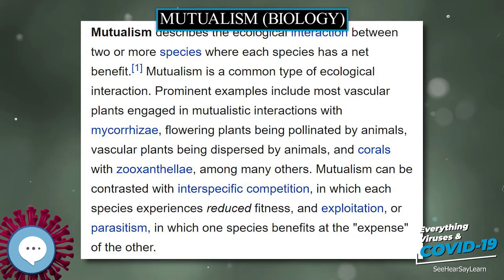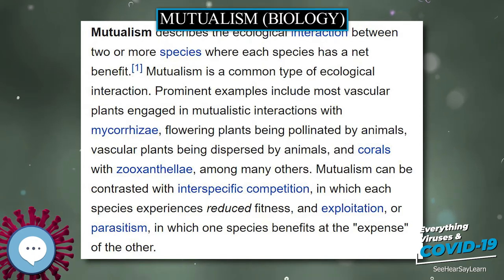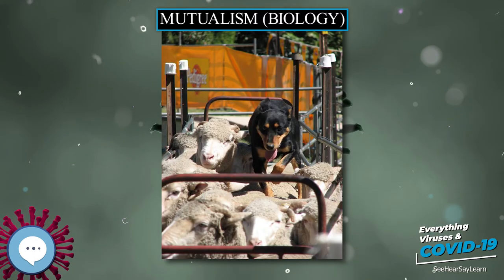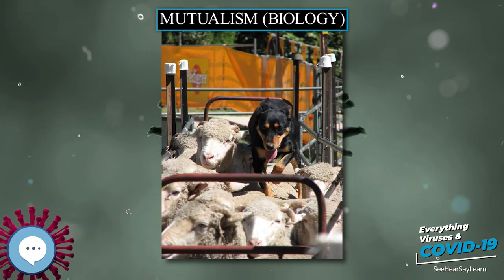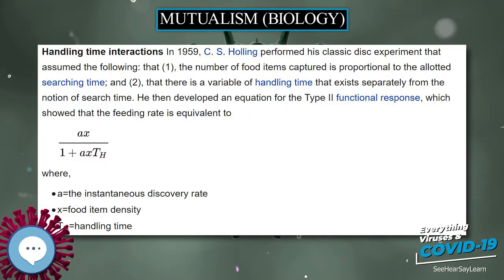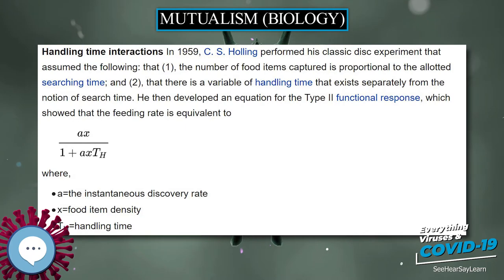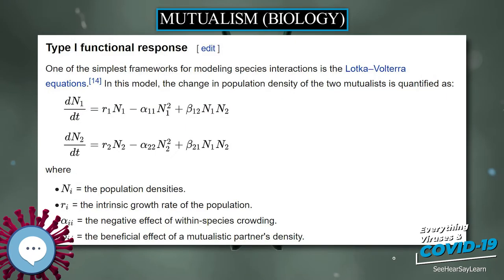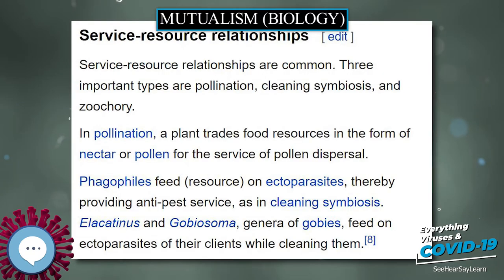Service-service relationships. Strict service-service interactions are very rare, for reasons that are far from clear. One example is the relationship between sea anemones and anemone fish in the family Pomacentridae. The anemones provide the fish with protection from predators, which cannot tolerate the stings of the anemones' tentacles, and the fish defend the anemones against butterfly fish, family Chaetodontidae, which eat anemones.